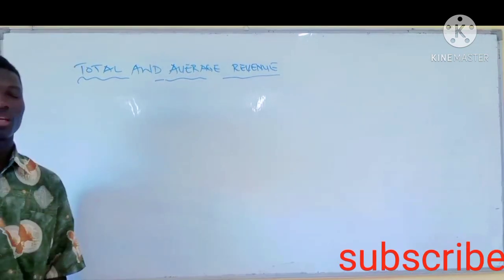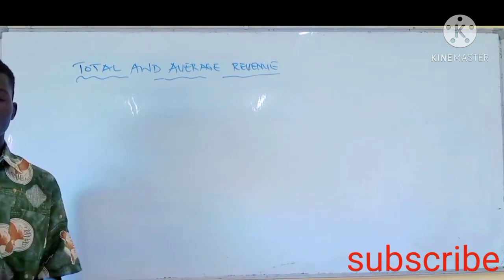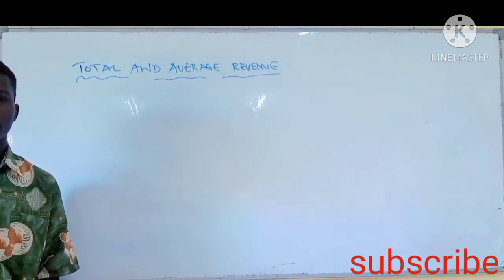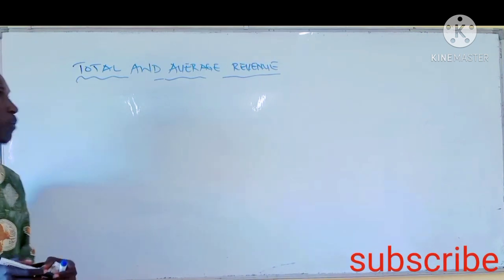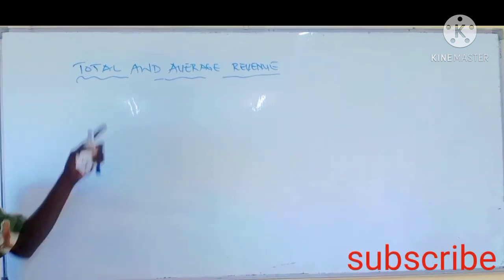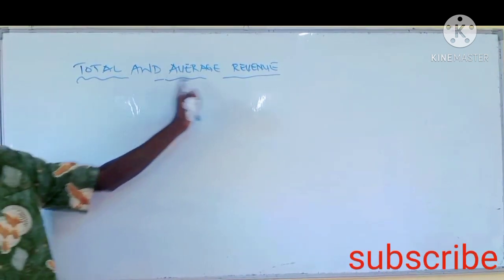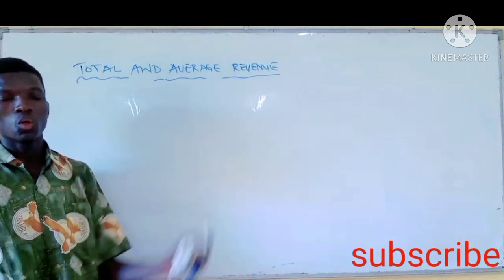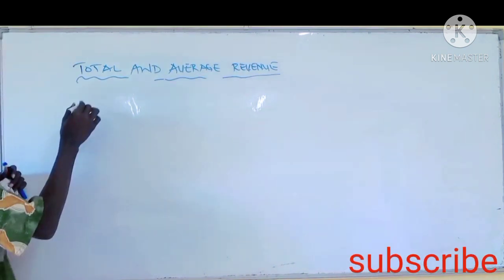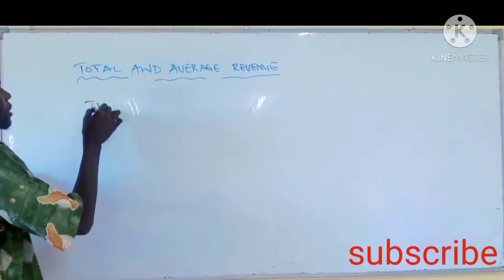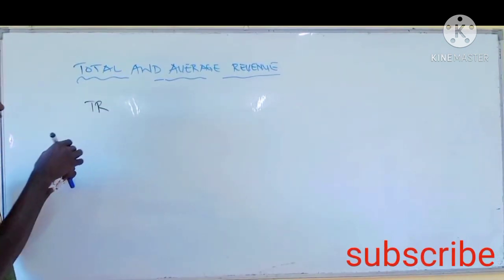Welcome back to Hyrus Academy. On today's sub-topic, we will be looking at total and adequate revenue. On total and adequate revenue, we have what we call TR.